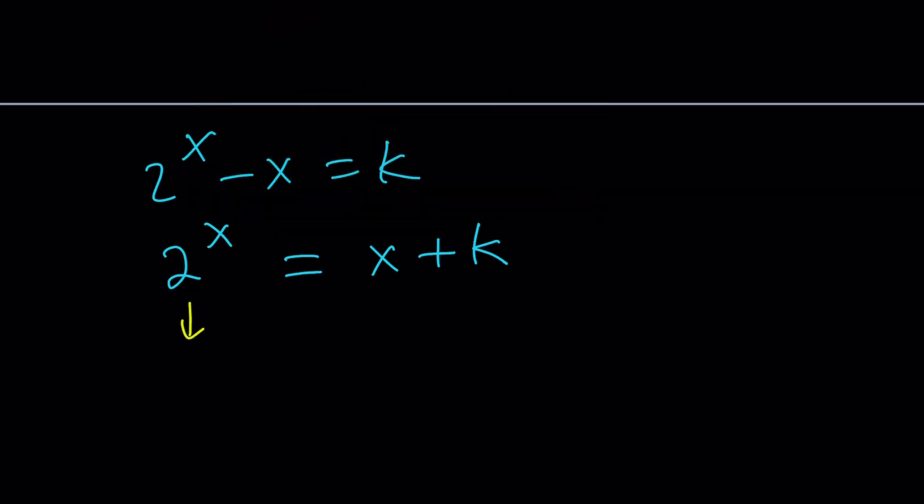2 to the power x is exponential and it's always increasing. And guess what? x plus k is also always increasing. So we can't say, hey, this is always going to have a single solution because one is increasing, the other one is decreasing. But they're both increasing.